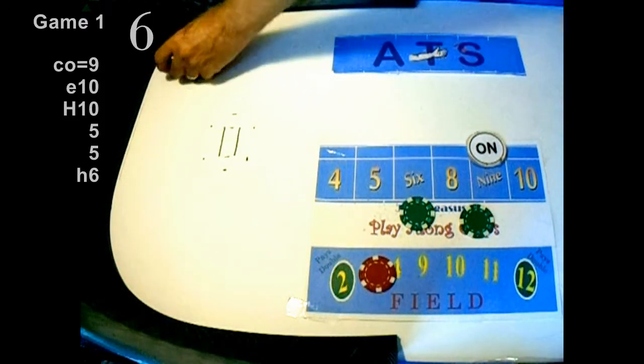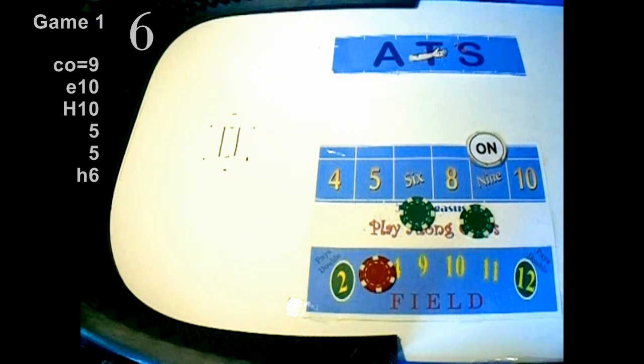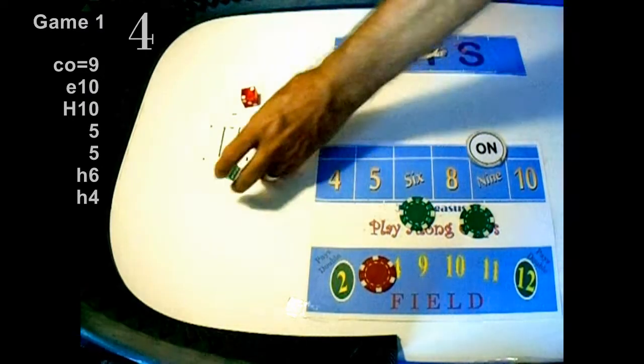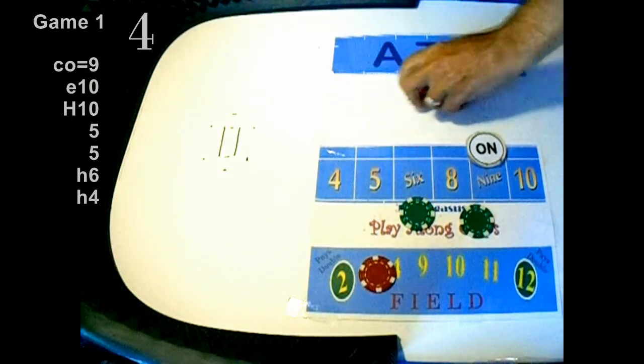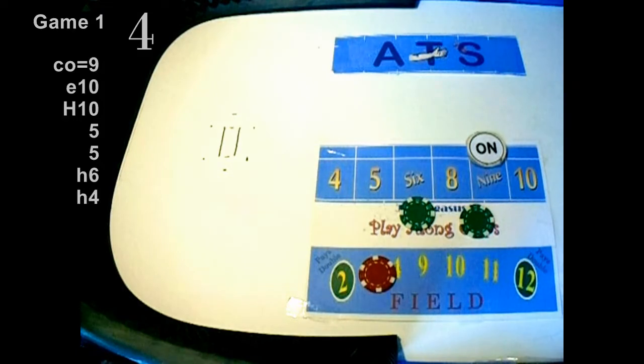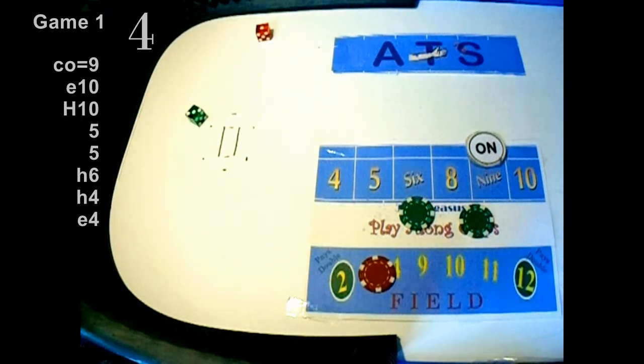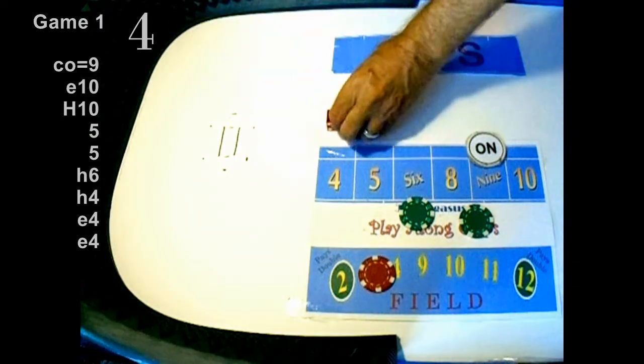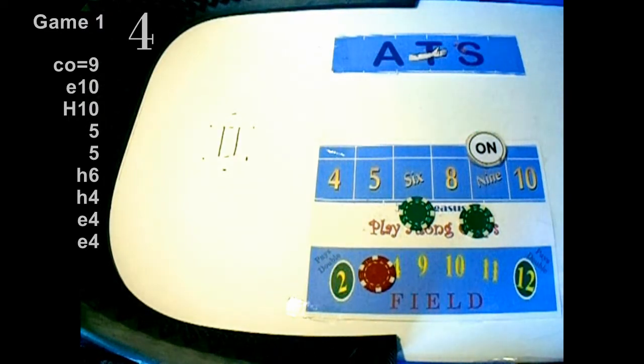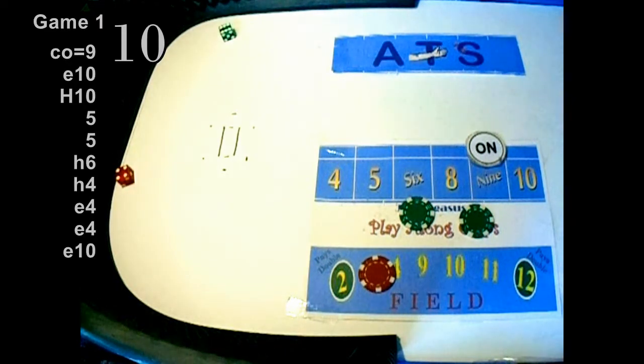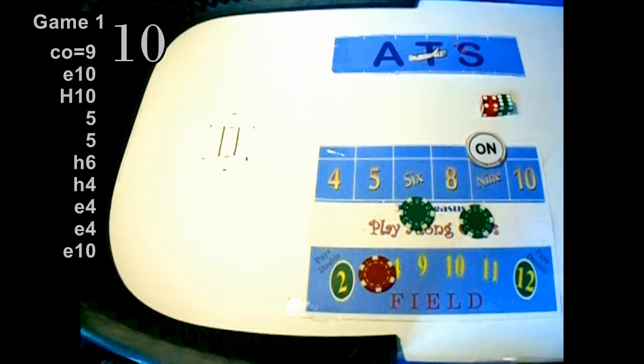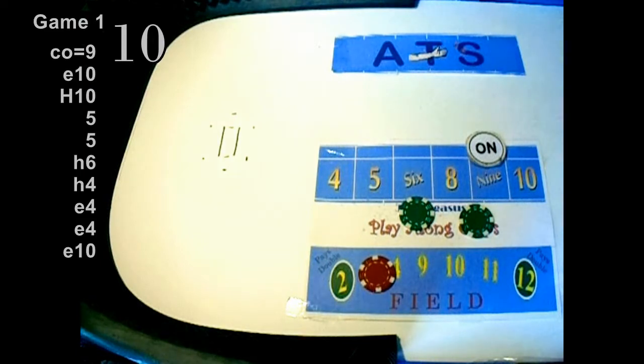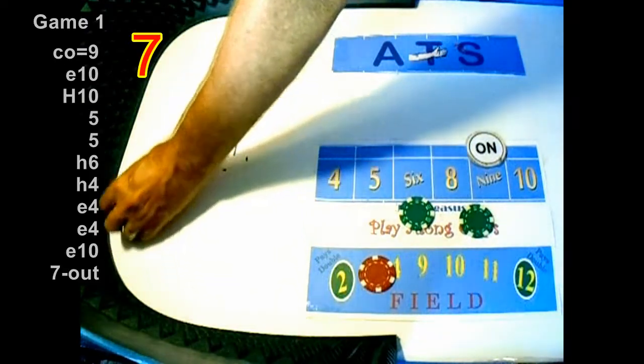49 across, five in the field, number is five. Hard six. Hard four, little Joe there for you, nice to see hard ways again. Easy four, three one easy four. That was sloppy as hell I know. Easy four, easy ten. Seven out, there's a seven.